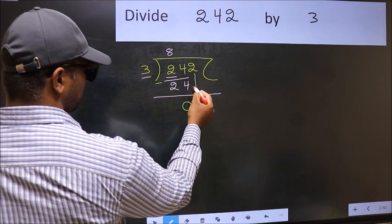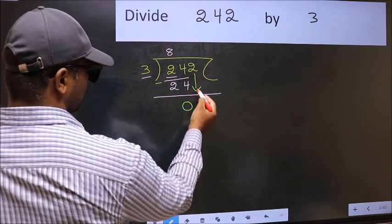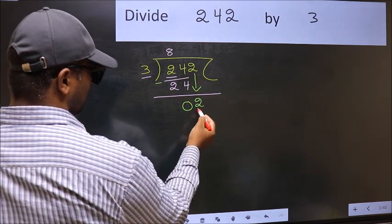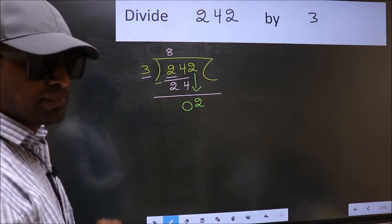After this, bring down the beside number. So 2 down. After this step, the mistake happens.